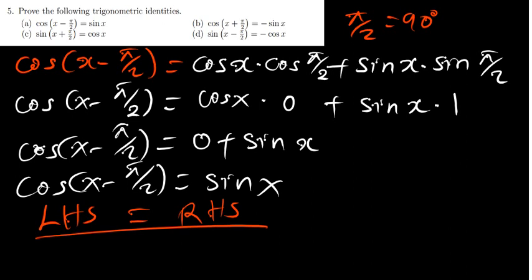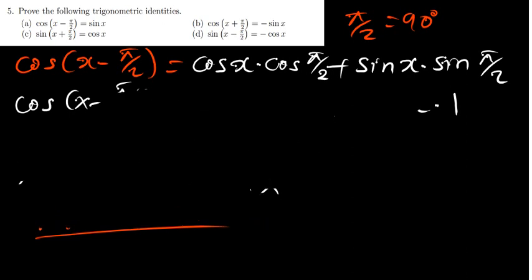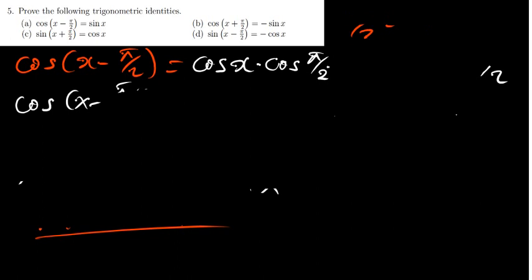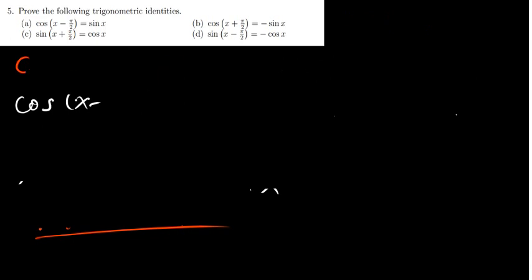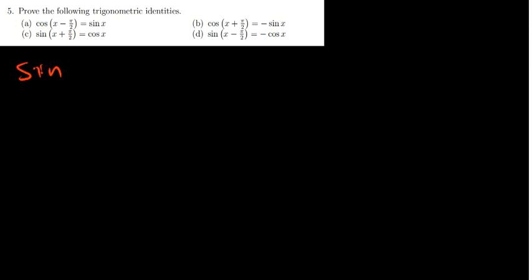Using the sum and difference formula, we are able to find the answers. Now let's go ahead and prove the next part. For sine, we have sine of (x plus pi over 2), and they want us to prove this equals cos x. Using the sine addition formula: sine x times cos 90 plus sine 90 times cos x.